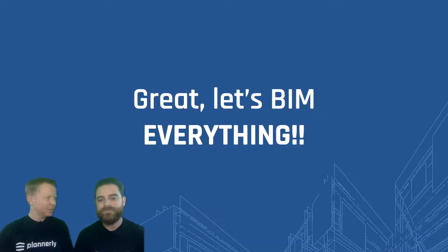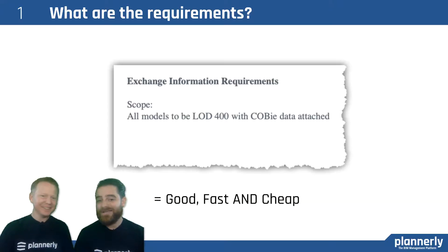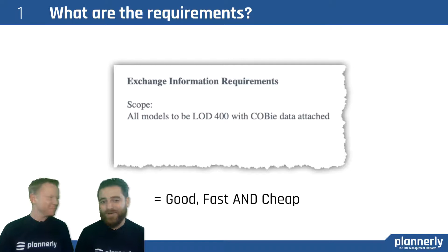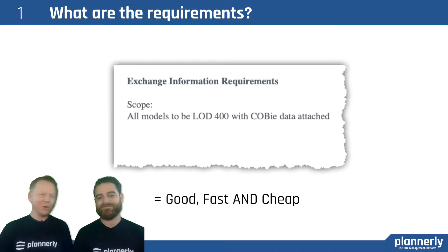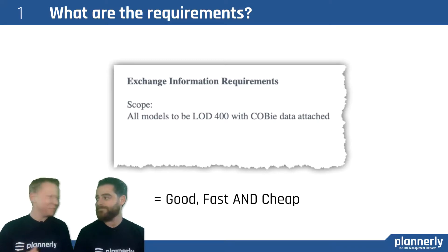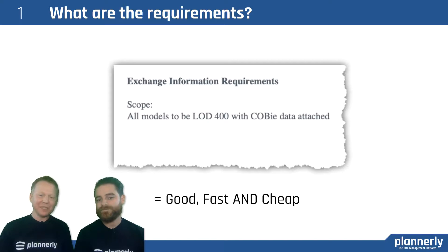Because you can use BIM for so many things, let's use it for everything — why not? Well, you might have already missed out on some opportunities early in design depending on where you are. You might still receive some very broad requirements. This is an example of some contract terms that an owner might, if they're not so informed, ask for. Asking for LOD 400 plus COBie is completely undefined and impossible to deliver — what they're really asking for is good, fast, and cheap all at the same time.